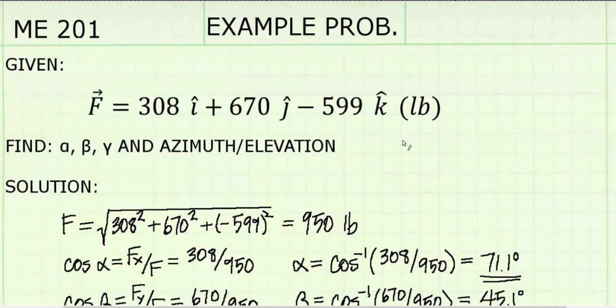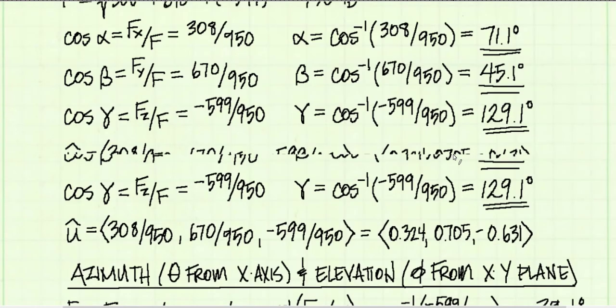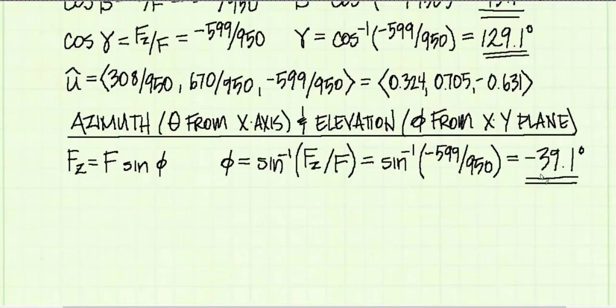Negative, does that make sense? Well, let's go back up and look at our original vector. We see that the k or z component is in the negative direction. So, this negative 39 degrees means that our elevation is below the horizontal plane. And so, yeah, that does make sense.